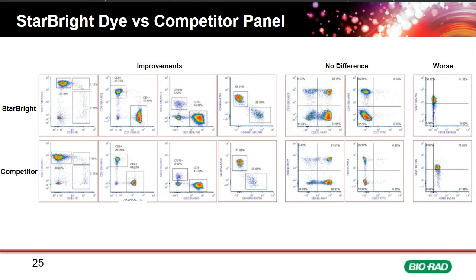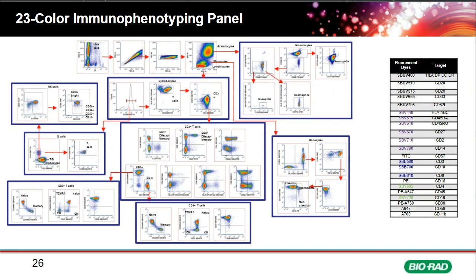A 23-color all-StarBright panel on the ZE5 — containing five StarBright UVs, six StarBright Violets, three StarBright Blues, and two of the new StarBright Yellow dyes — in 1% PBS/BSA with no special buffer successfully identified B-cells, T-cells, different T-cell memory phenotypes, different monocyte populations, granulocyte populations, and NK cell populations, confirming that StarBright dyes work in very large panels and are compatible with other fluorophores.